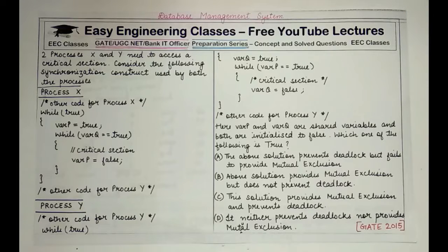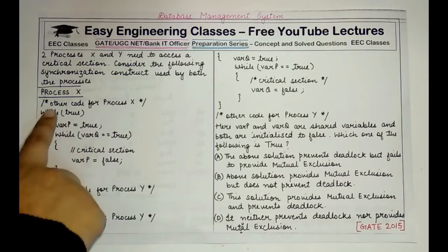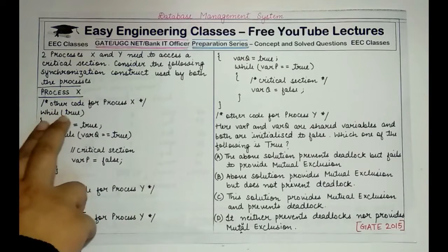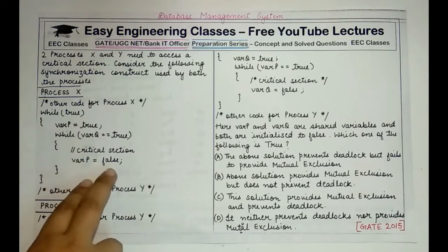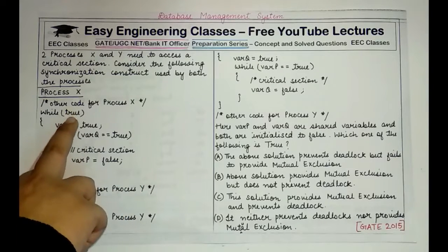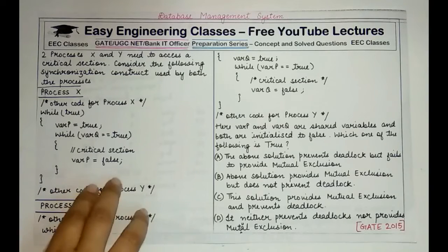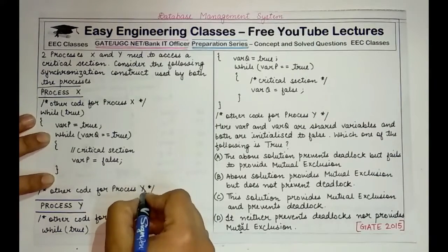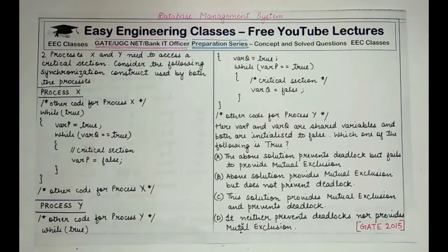The next question states: two processes X and Y need to access a critical section. Process X has some code, followed by an outer while(true) loop containing the critical section, and then remaining code after the loop. The entry to the critical section is controlled by the while loop.